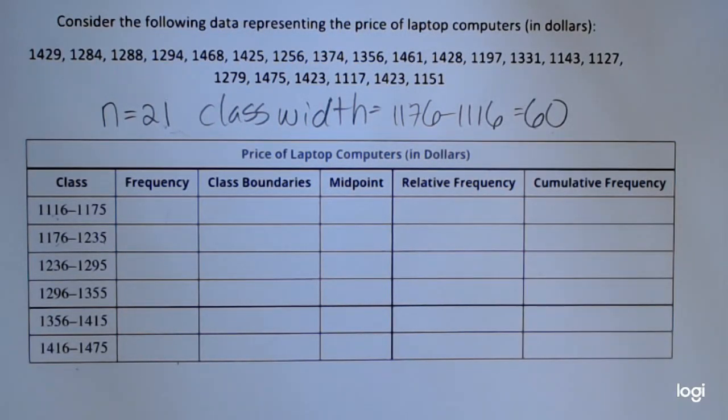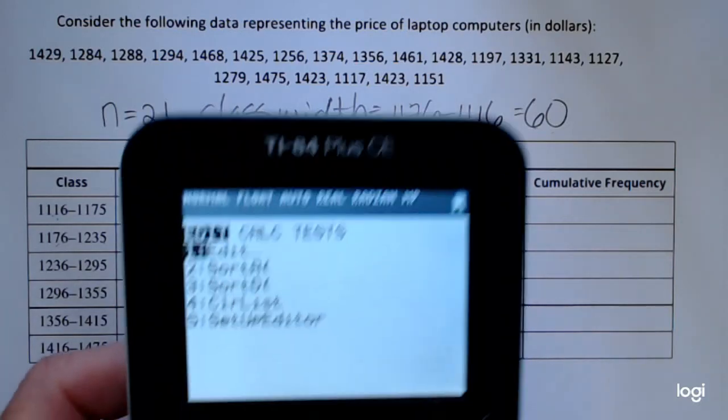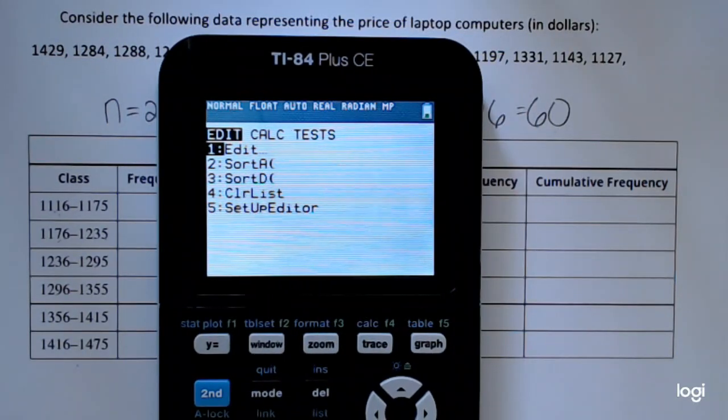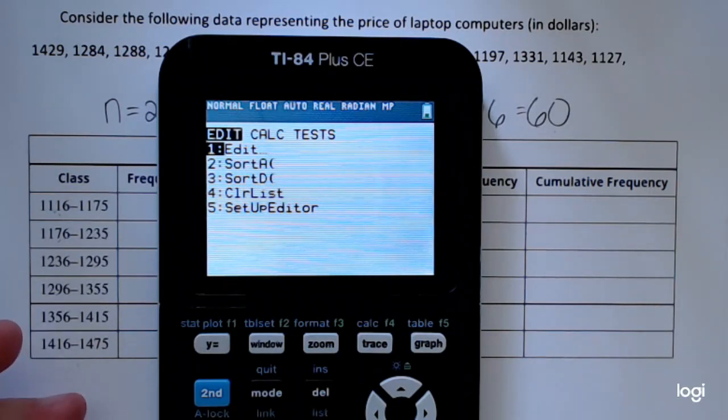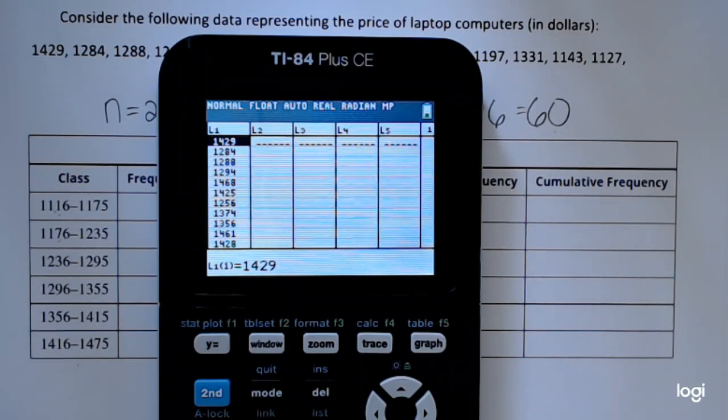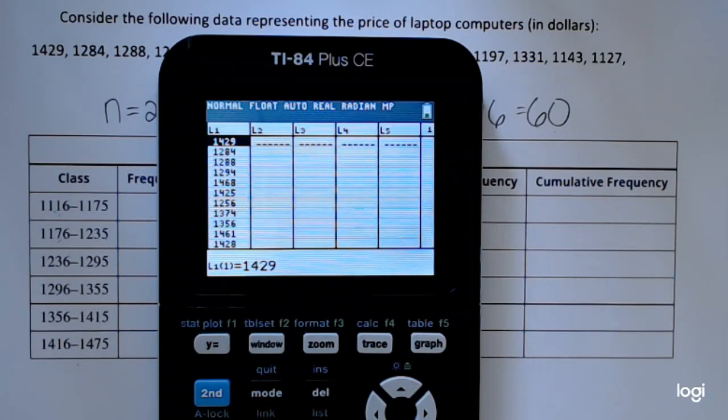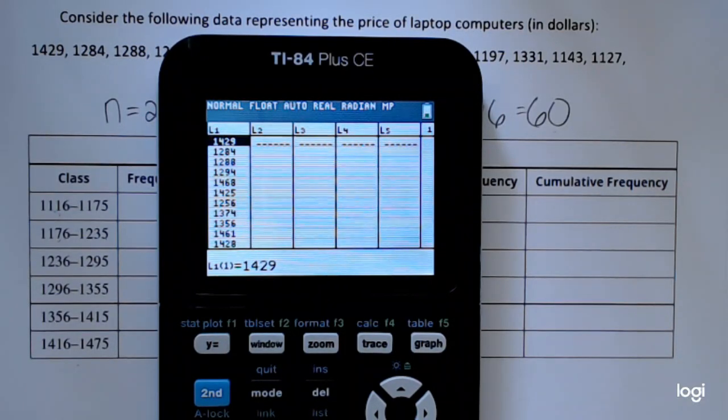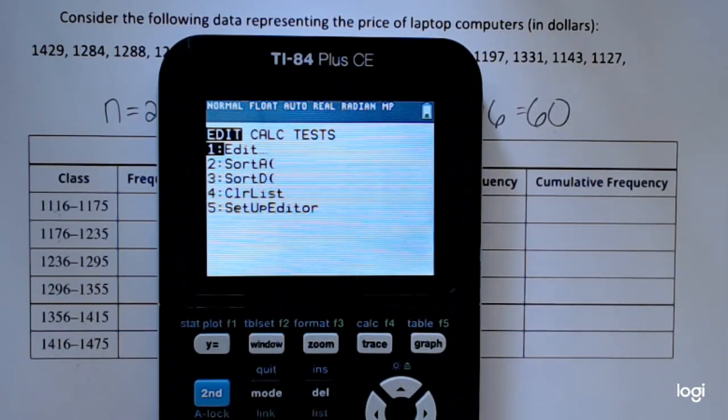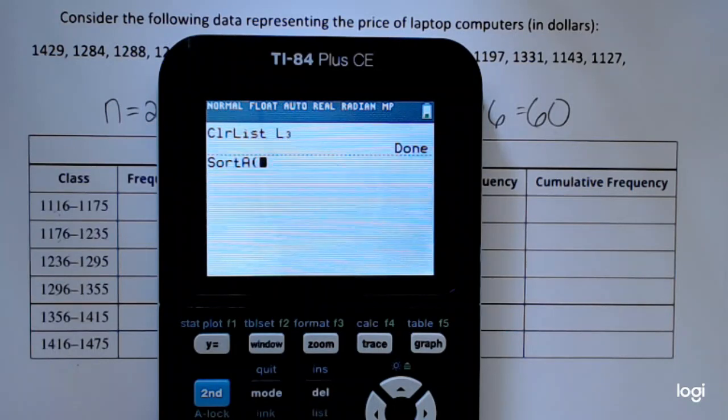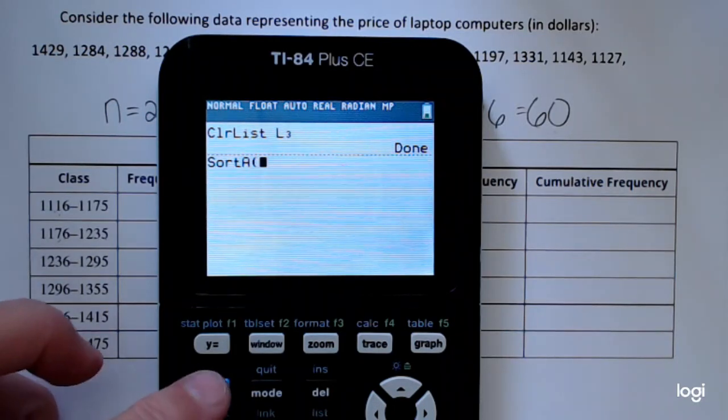I've already inputted the data set into my calculator by using the edit screen. The data is not put in order. I need that to help me determine how many fall in each class. So to sort, I'm going to go back to my stat menu, select sort A for sort ascending, and then tell it the list where my data is.